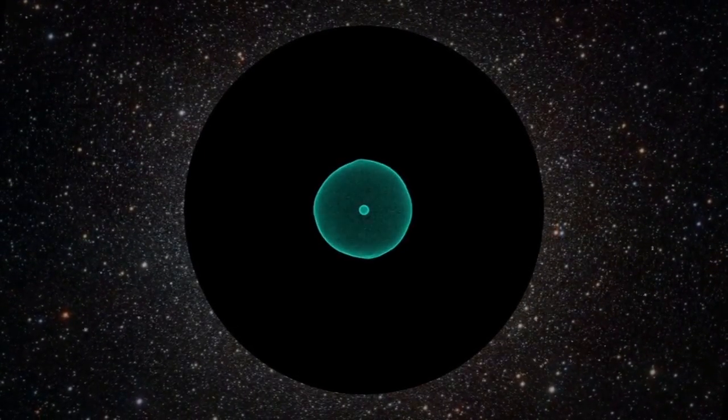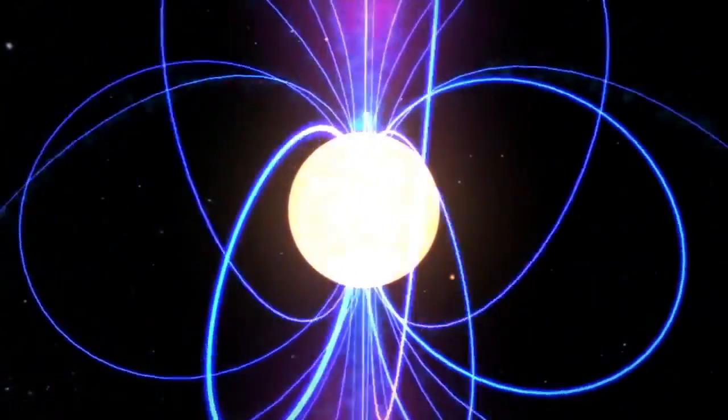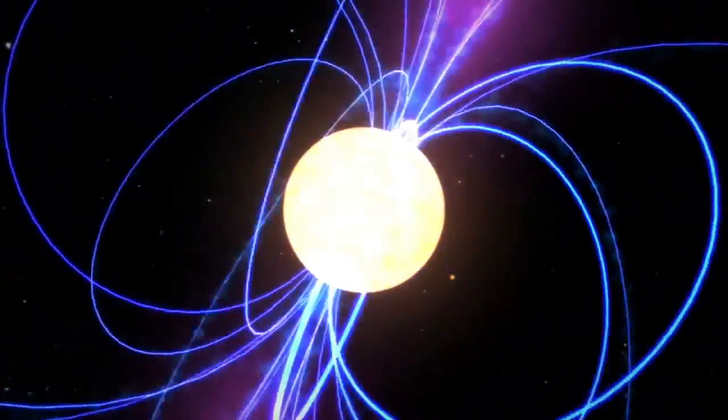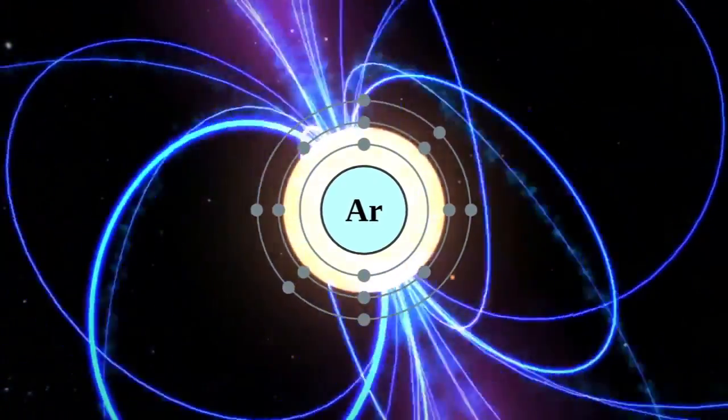In this case, the argon in the nebula is zapped by fierce ultraviolet light from the central neutron star, the ultra-dense remnant of the core of the star that exploded. This rips electrons off the argon, making it easier for it to combine with other material in the gas.